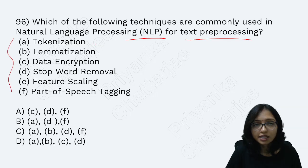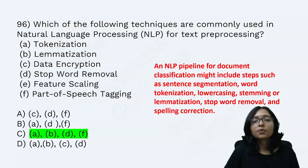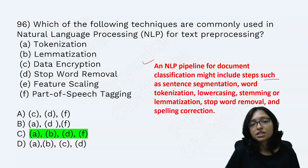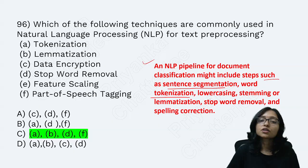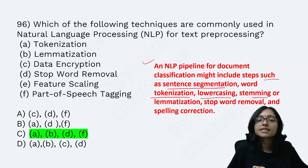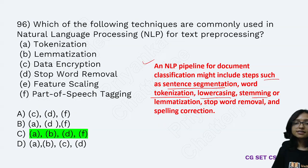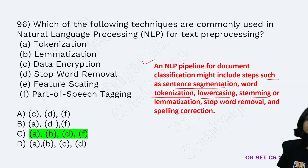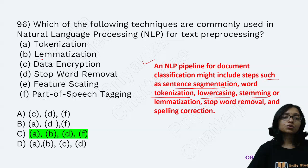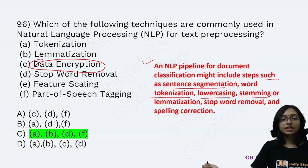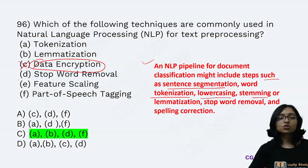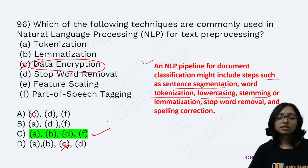In NLP, for text processing, the correct pipeline steps are: tokenization, sentence segmentation, word tokenization, lowercasing, stemming (also called lemmatization), stop word removal, and spelling correction. Data encryption is not part of text processing, so you can eliminate that option to get the correct answer.